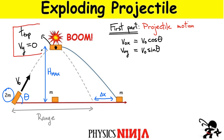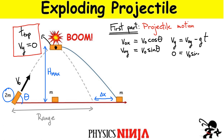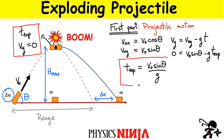That zero y-velocity at the top allows us to obtain a simple expression for the time to reach the top. Using one of the kinematic equations, the y-velocity at any time is v_y = v0y − g·t. Setting v_y = 0 means we're at the top, giving us t_top = v0·sin(θ) / g. We want this time because it lets us find how far the projectile has traveled horizontally when it reaches the top.